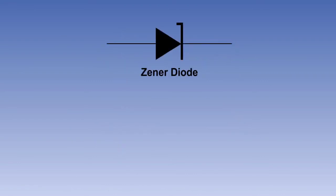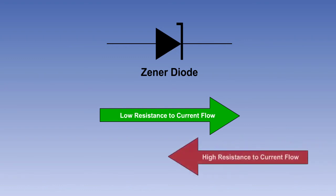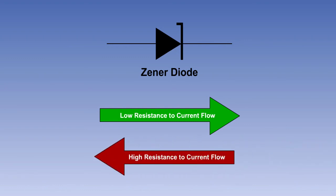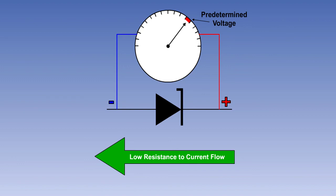There is another type of diode rectifier you may come across, known as the Zener diode rectifier. The symbol for a Zener diode is shown here. This type of diode allows unrestricted current flow in one direction. But if the polarity of the voltage is reversed, it will block current flow, until at a predetermined voltage drop across the diode, it will allow reverse current to flow without restriction. Zener diodes are often used in voltage regulator circuits.